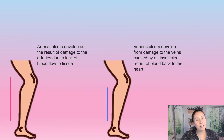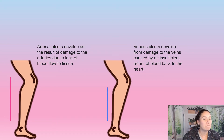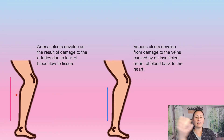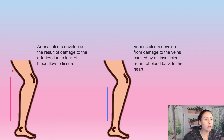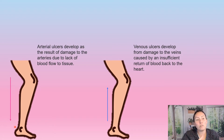Arterial ulcers develop as a result of damage to the arteries due to a lack of blood flow to the tissues. As shown right here, our arteries bring blood from our heart down to our tissues and limbs. If we're not getting proper blood flow down, we can get arterial ulcers.